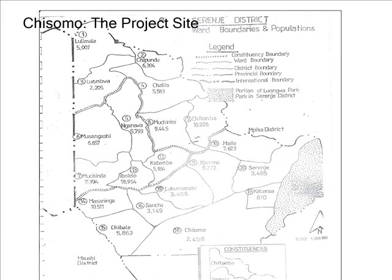Chisomo area lies in Chisomo game management area, which is one of the richest game management areas in Zambia. The livelihoods of the people in Chisomo are mostly poaching, followed by peasant farming using poor traditional methods like the Chitemene system — which involves cutting and burning of tree branches — and intensive fishing using unorthodox methods such as poisoning and blasting.